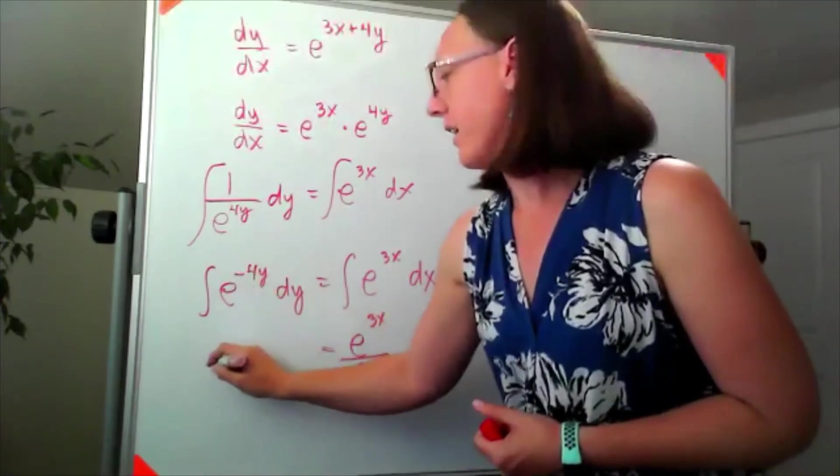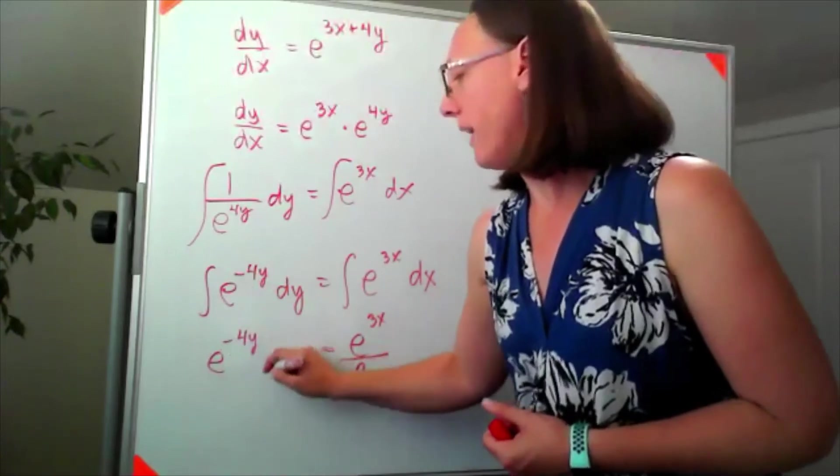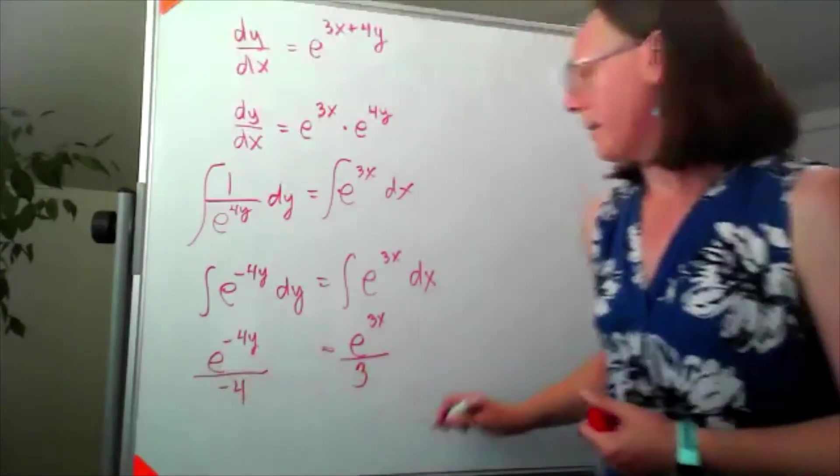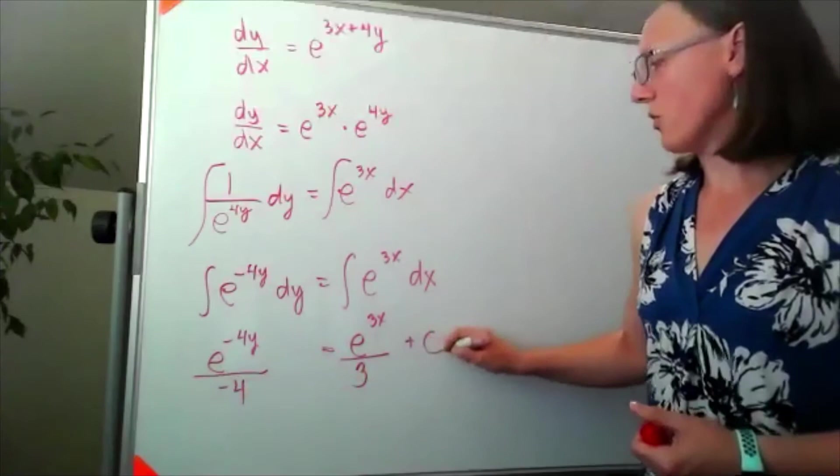Over here on this side, I end up with e to the negative 4y divided by negative 4. And that is all going to be equal to a constant.